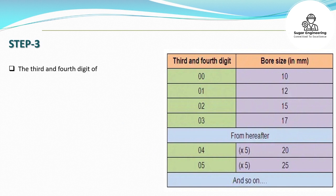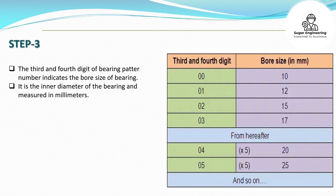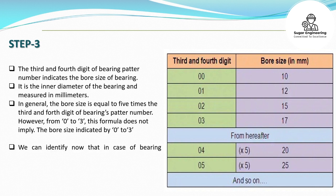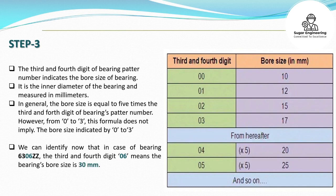Step 3: The third and fourth digits of the bearing pattern number indicate the bore size of the bearing. It is the inner diameter of the bearing measured in millimeters. In general, the bore size is equal to 5 times the third and fourth digits of the bearing's pattern number. However, from 0 to 3, this formula does not apply. In the case of bearing 6306ZZ, the third and fourth digits 06 means the bearing's bore size is 30 millimeters.